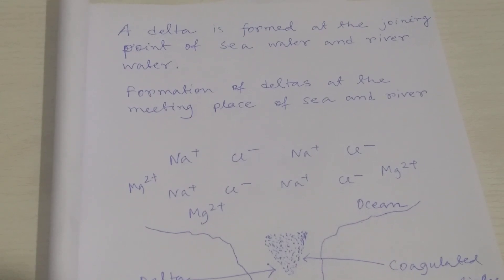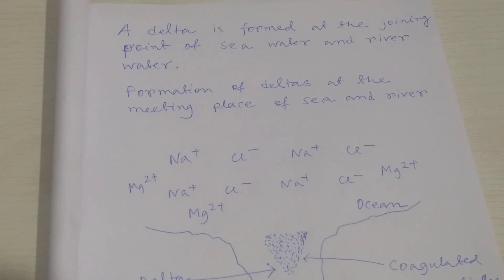A delta is formed at the joining point of seawater and river water — or you can say, formation of deltas at the meeting place of sea and river. Why is a delta formed? Give reason. This is the question: what is the reason behind delta formation at the joining point of seawater and river water? In this video I explain the answer to this question in detail.